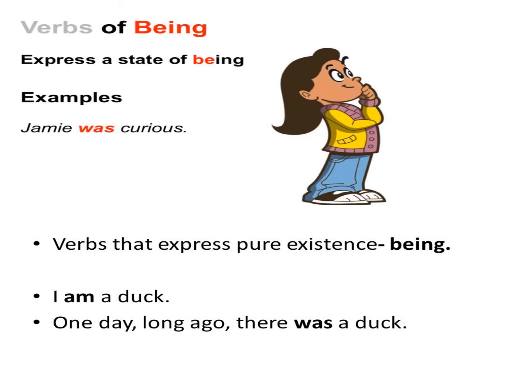I am a duck. So, what is the state of this girl? Am. Which word shows that she is a duck or not? Am would show that she is a duck. One day long ago, there was a duck. The word was is showing the existence of this duck. He is a policeman. So, what is the state of the policeman? Is. So, am, was, is — these are the state verbs.